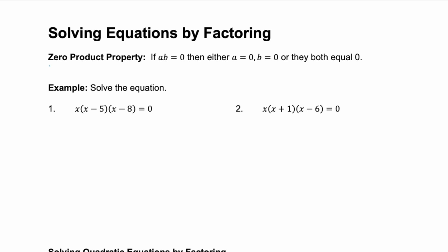You just need to remember the zero product property. That just tells you if you have two factors, a times b, that multiply and equal zero, then either a has to be zero, b has to be zero, or they both have to be zero.